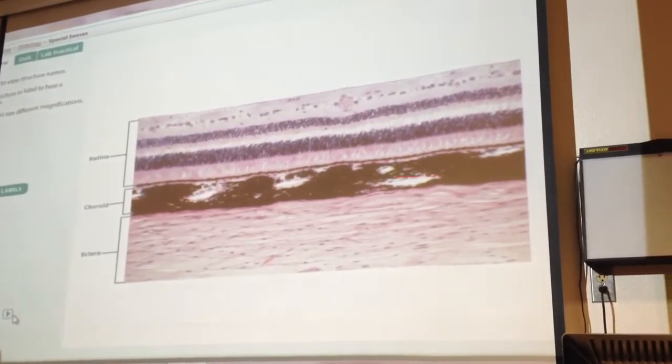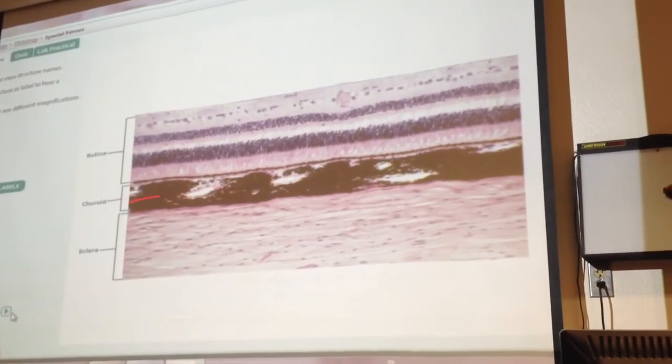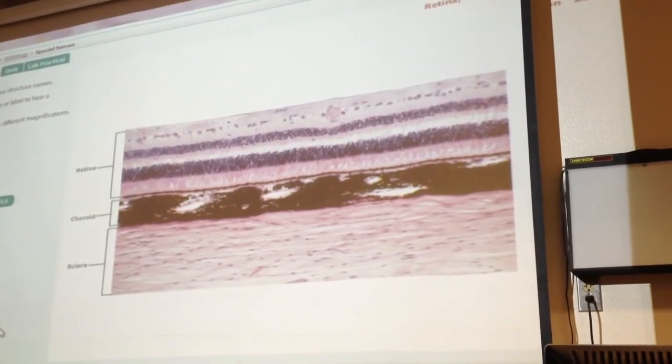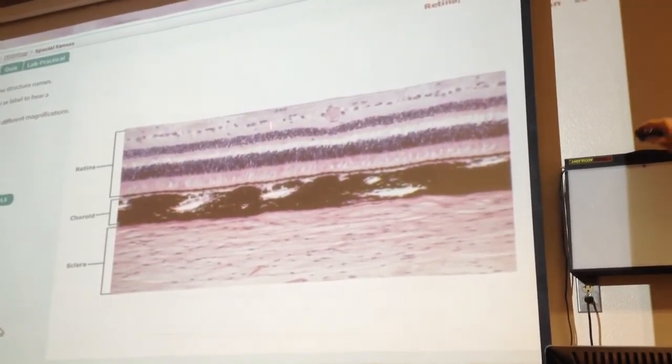Here's the choroid. It looks black or brown. It's got all the pigmentation and the blood supply. And here is the retina. And so the light's going to be coming in this way.